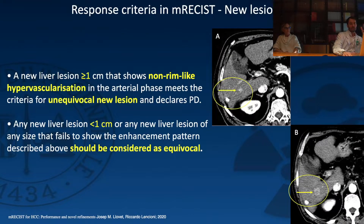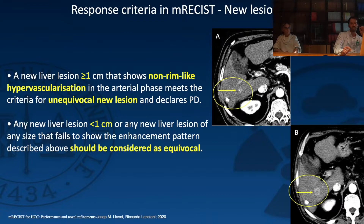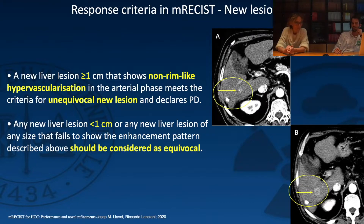New lesions during follow-up must be monitored carefully. If a new arterial-enhancing lesion appears in the liver but is under 1 cm, continue the study. If it increases in volume at a subsequent follow-up, you can call it progressive disease, taking the first time point of appearance as the reference for comparison. After this overview, we now turn to Dr. Bargellini, who will discuss therapies in hepatocellular carcinoma, followed by the iRECIST criteria.